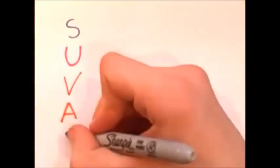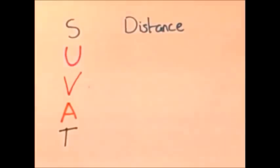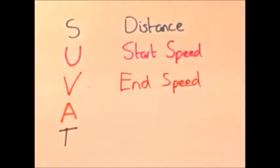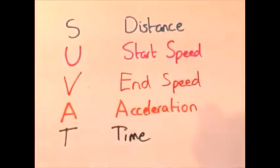SUVAT. The S is for displacement, or distance. The U is for initial velocity, or start speed. The V is for final velocity, or end speed. The A is for acceleration, and the T is for time.